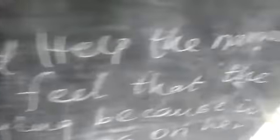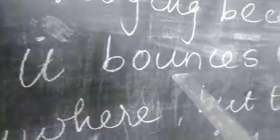Third one. How does the wind help the narrator? The poet feels that the wind is annoying because it teases her. It bounces on her from everywhere, but she still thinks that the wind is essential.